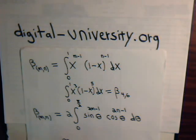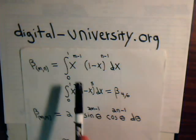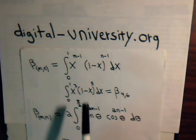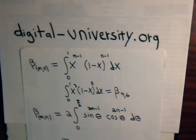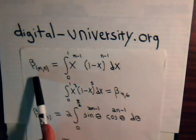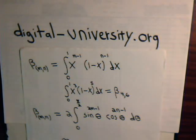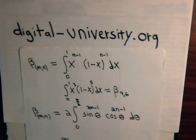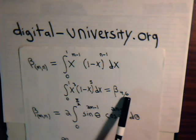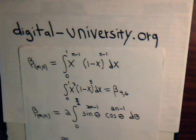Remember the basic definition of the beta integral function: it is written with terms x and 1 minus x, where the exponents correspond to the first two arguments of the beta function. If this is m, the exponent on the x term is m minus 1; if this is n, the exponent on the (1 minus x) term is n minus 1. For example, the integral of x cubed times (1 minus x) to the fifth equals beta(4, 6), since 4 minus 1 is 3 and 6 minus 1 is 5. The limits on x go from 0 to 1.